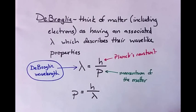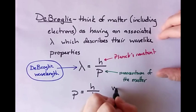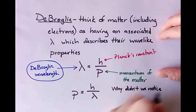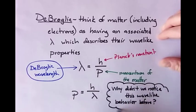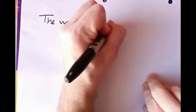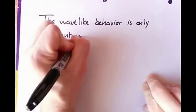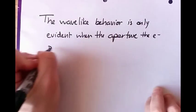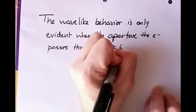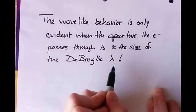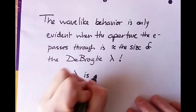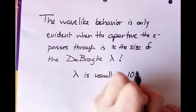So then we have to ask ourselves, why have we not noticed this wave-like behavior of electrons before? Why have we gotten away with thinking about electrons as particles for so long? It's because the wave-like behavior is only evident when the aperture that the electron passes through is approximately the size of the de Broglie wavelength.